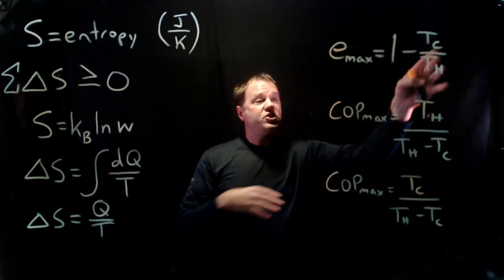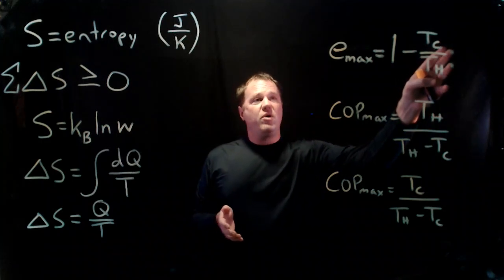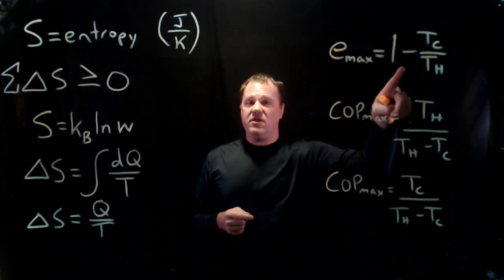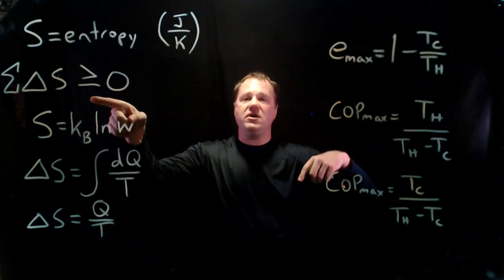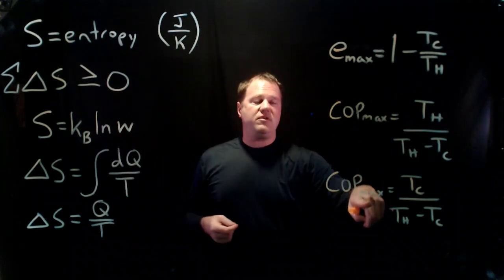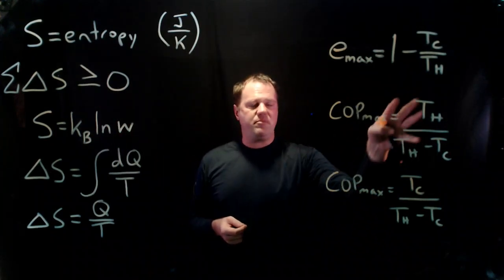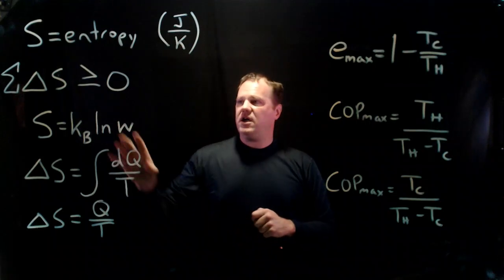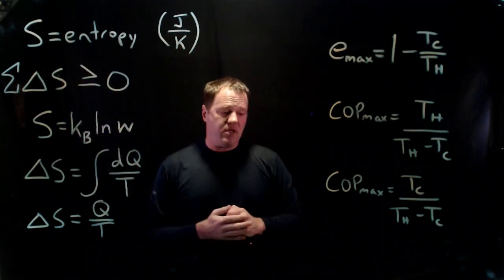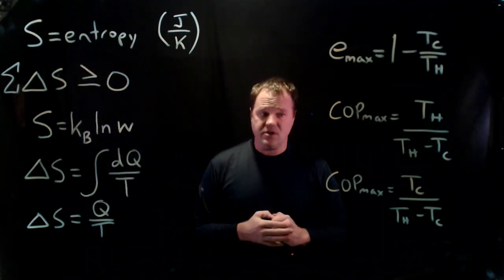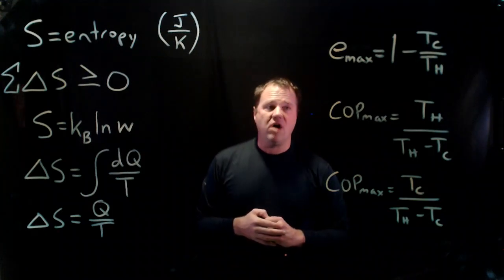If you were to build a heat engine with an efficiency greater than this, then you'd be decreasing the entropy of the universe. And likewise, if you had a coefficient of performance for a heat pump that exceeded one of these calculations, then you would be lowering the entropy of the universe in contradiction to the second law of thermodynamics.